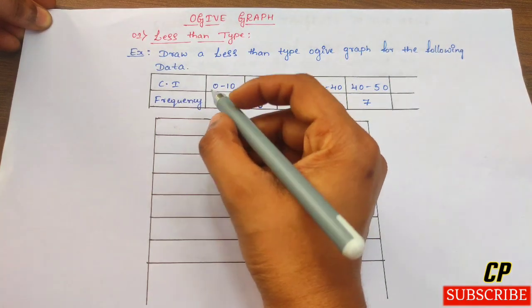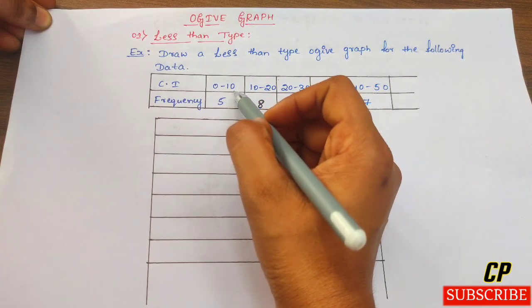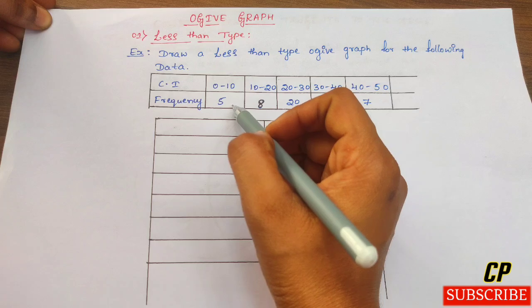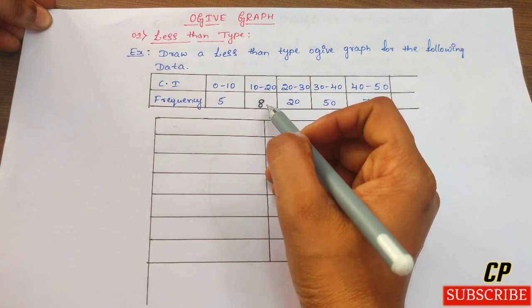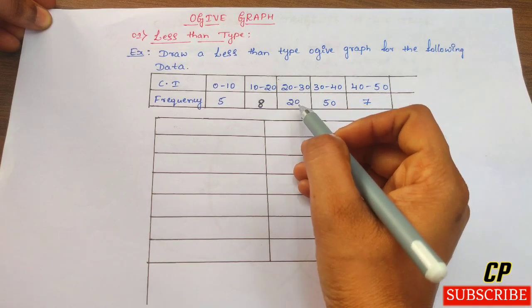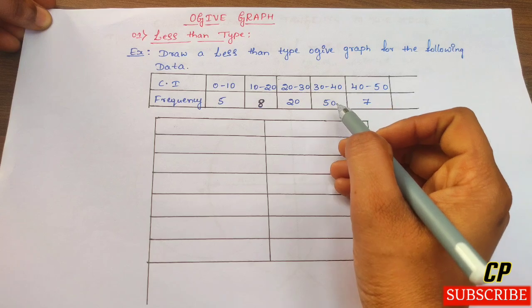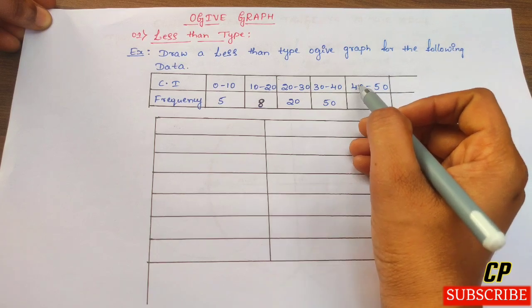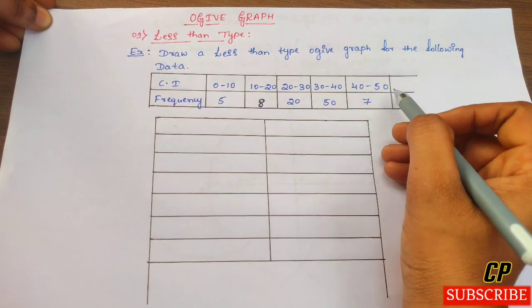Class intervals and frequencies are given: 0 to 10 frequency is 5, 10 to 20 frequency is 8, 20 to 30 is 20, 30 to 40 is 50, 40 to 50 is 7.